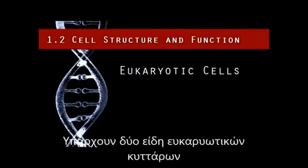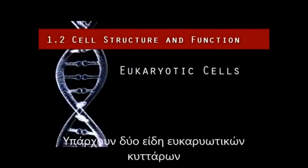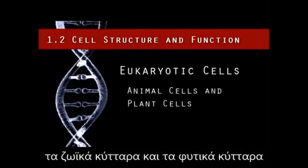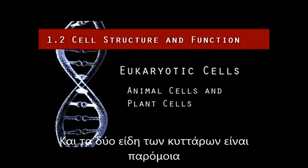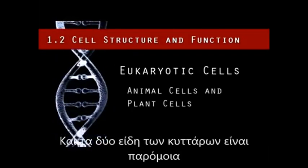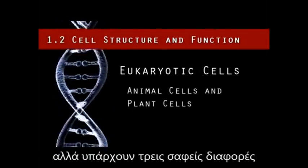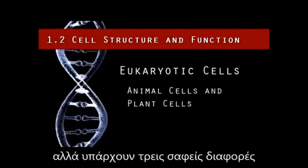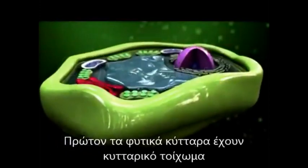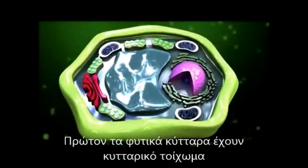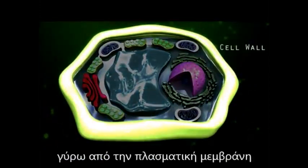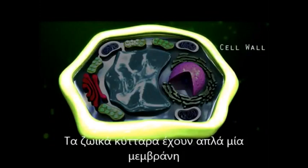There are actually two types of eukaryotic cells: animal cells and plant cells. Both types of cells are very similar, but there are three distinct differences. First, plant cells have a cell wall surrounding the plasma cell membrane, whereas animal cells just have a cell membrane.